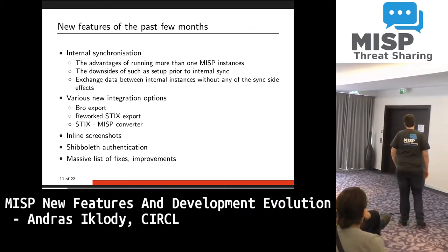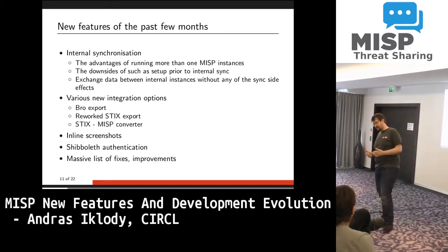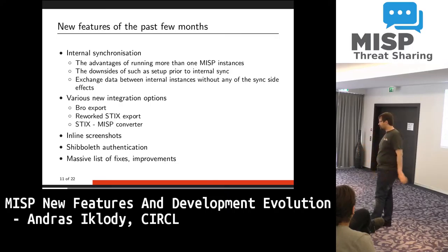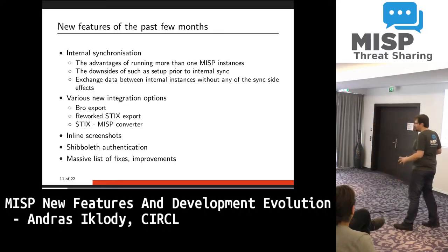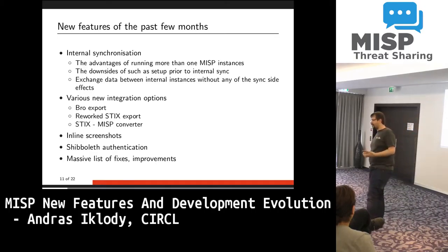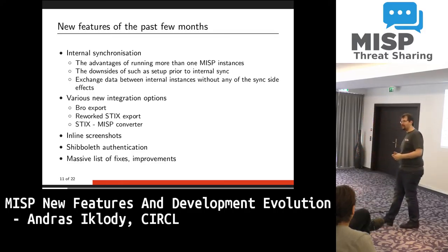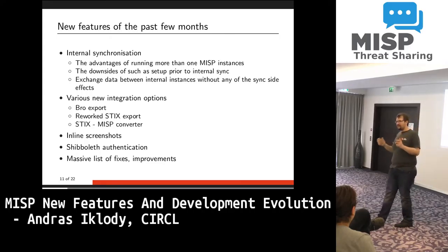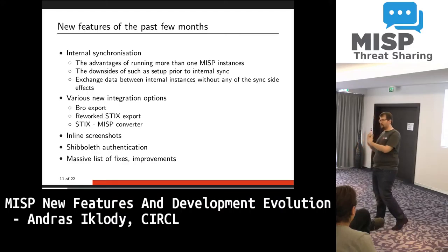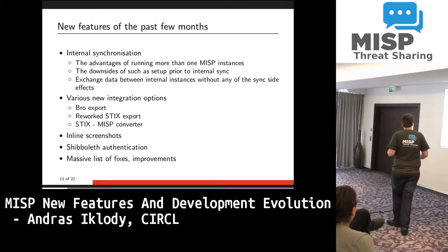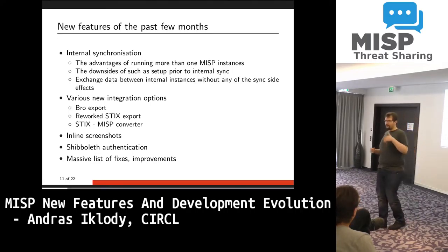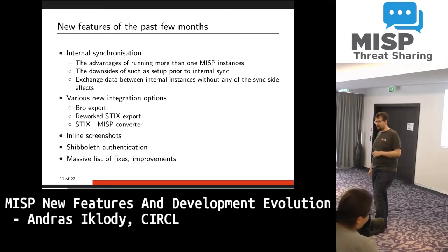Another new feature is internal synchronization. Organizations might run more than one MISP instance — for example, an internal sandboxing instance for raw junk data and an external instance for sharing with partners. The issue was that moving data between them would downgrade distribution levels by default. With internal synchronization between those two instances, all those rules are ignored: data is copied one-to-one and you can cherry-pick what to move over. It has protection mechanisms so you don't accidentally set up internal sync with an external partner — it requires the host organization settings to match.